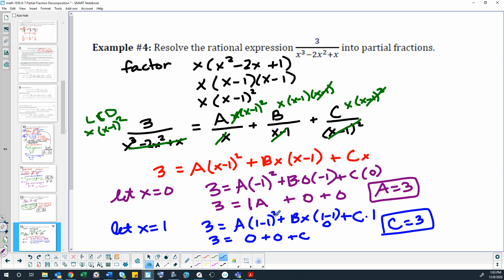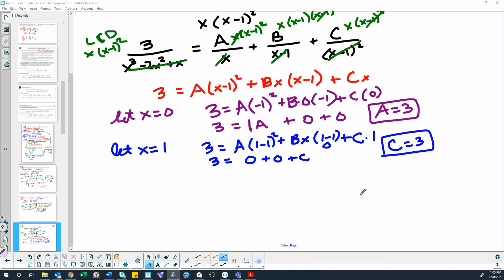Now B is harder to find because zero canceled it out and one canceled it out. So we can use an entirely different number along with plugging in the A and C that we just found, or we could group our terms together. There's many ways you can proceed. I would say let's go ahead and do the gathering up method.